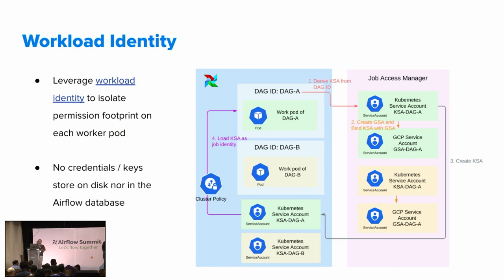As shown in this graph in steps two and three. Then in step four, once a DAG is scheduled for execution, its container is equipped with the Kubernetes service account. Because of the linkage between the Kubernetes service account and the GCP service account, the DAG is able to use GCP service account credentials to access different resources. Because of this convenience, we are able to get rid of credentials stored in the metadata DB and get rid of connections, which significantly reduces the potential leakage of credentials such as service account keys.